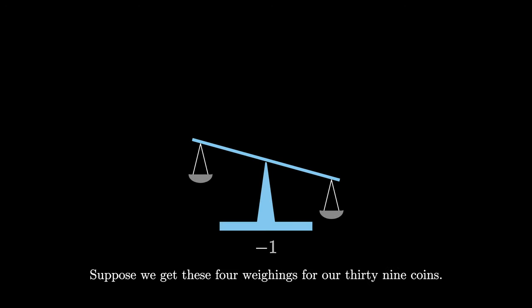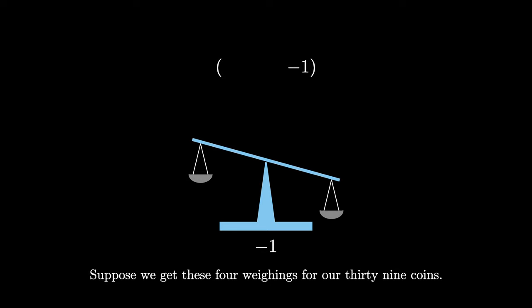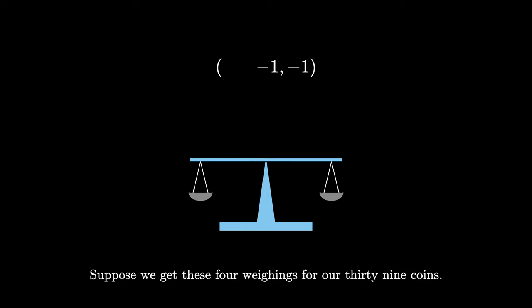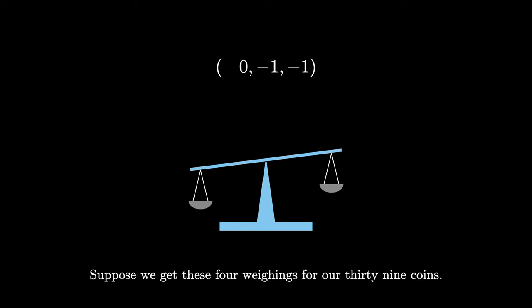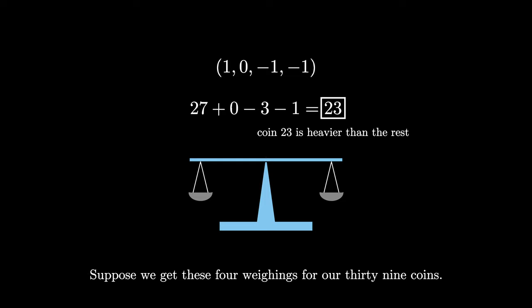Let's see how this works in practice with 39 coins. The first weighing tips to the right, giving a least significant digit of negative 1. The next weighing tips to the right again, giving another digit of negative 1. The third weighing stays balanced with a digit of 0. The final weighing tips to the left, giving a digit of 1. Reading off the balanced ternary representation: 27 plus 0 minus 3 minus 1 equals 23. Coin 23 is counterfeit, and since 23 matches the positive 23 on our representative list, it is heavier than the rest.